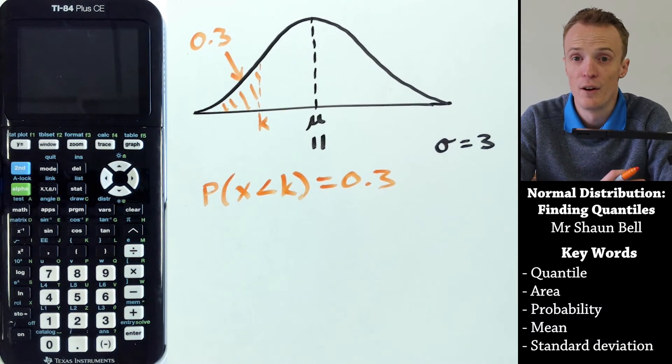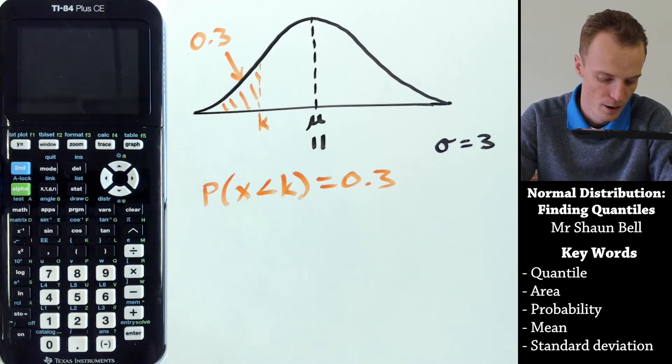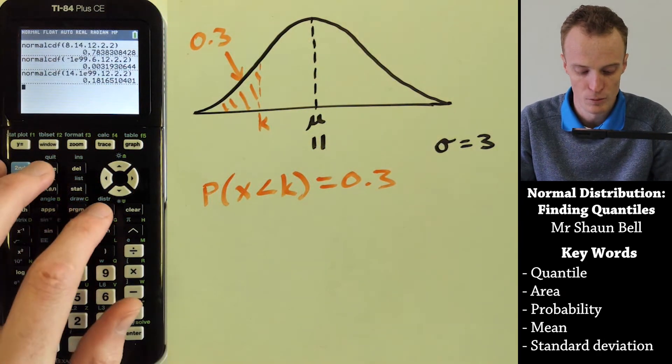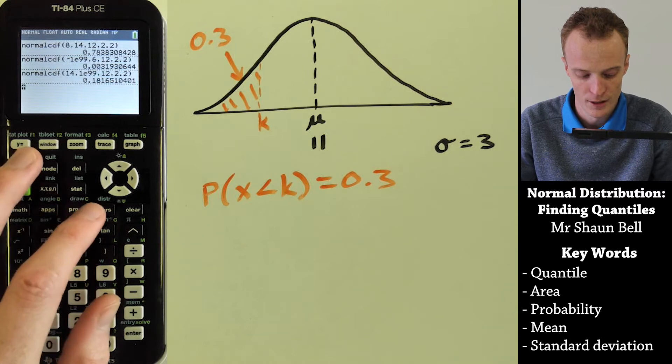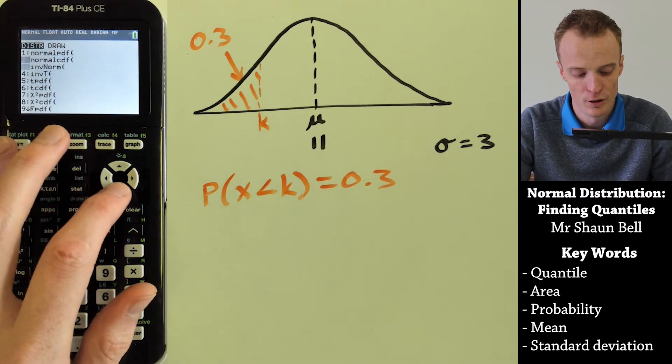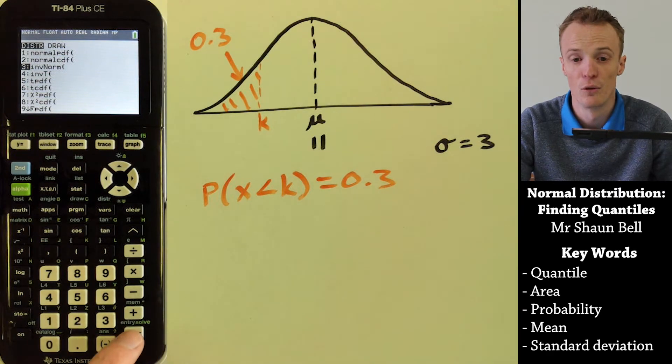Now our graphics calculator can find this value quite quickly. If we go to the distribution section, second distribution, we can go to function 3, which is inverse norm.